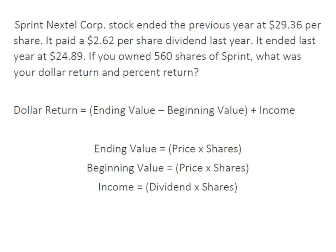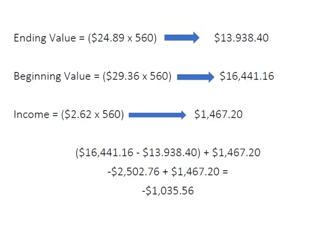what was your dollar return and then your percentage return? The dollar return is found by taking the ending value minus the beginning value, and then to that we add our income — in this instance the income comes from the dividend. So ending value is the price times the number of shares held, beginning value is price times the number of shares held,